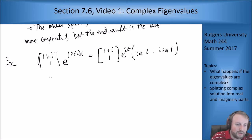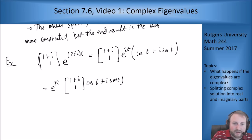move some things around a little bit so I'm going to move the e to the 2t to the front because I can, and then (1+i, 1) times (cosine t plus i sine t). And now what I'm going to do is I want to multiply this cosine plus i sine inside the vector.